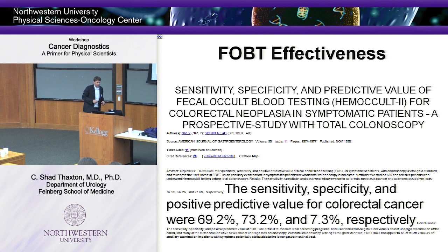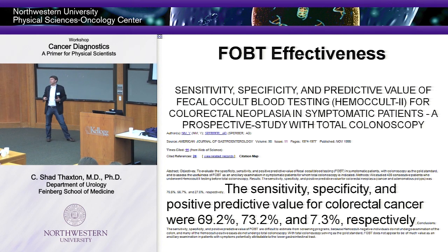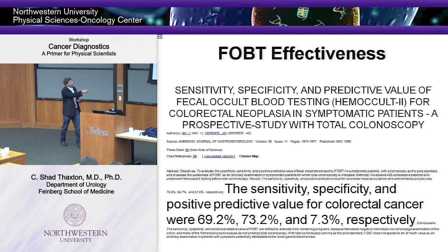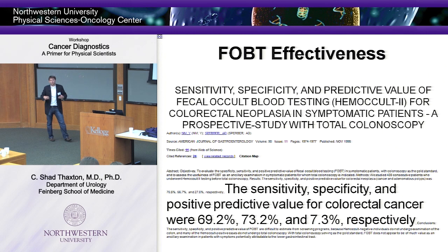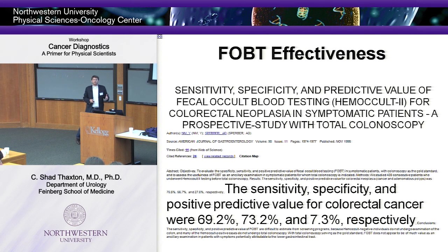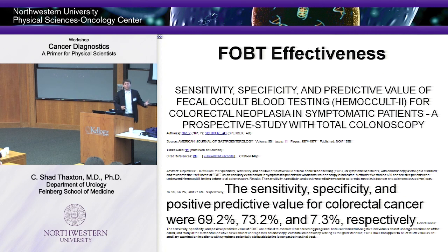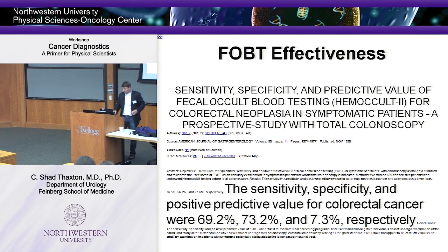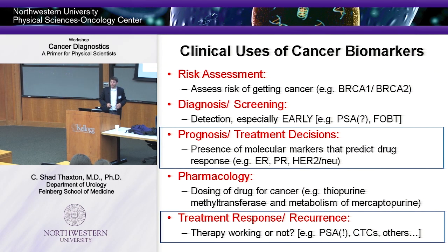A paper I was thinking of shows exactly this process — taking patients going to have a colonoscopy, using a fecal occult blood test to test for blood in the stool, and comparing the performance versus the gold standard of colonoscopy and biopsy. This test has a sensitivity of 69%, a specificity of 73.2%, and a positive predictive value of 7.3%. So only about 7% of patients with a positive fecal occult blood test actually had colon cancer when the diagnostic test was done. But it's a relatively small price to pay to detect colon cancer at a very early stage where you can do something about it.